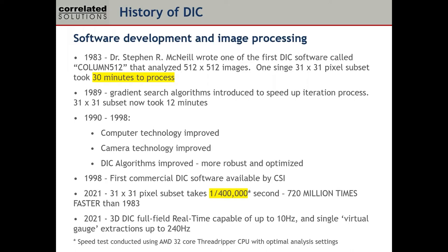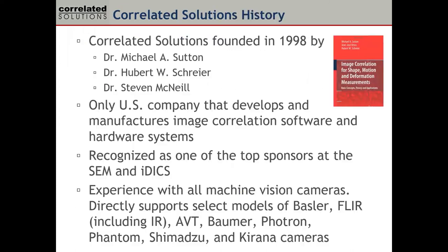Our company was founded in 1998, when the first commercial 3D DIC software became available. Our CEO, Dr. Hubert Schreier, came to the US from Germany and worked under Dr. Michael Sutton. Hubert Schreier essentially translated the academic code into a commercial user interface product. Correlated Solutions is the only company in the United States that actually manufactures digital image correlation systems.